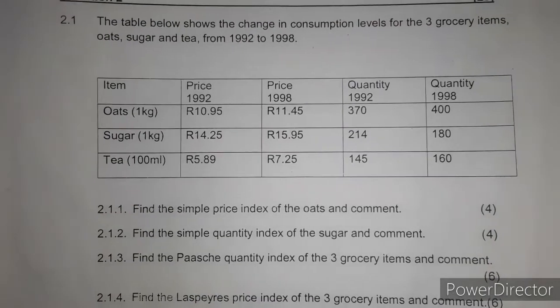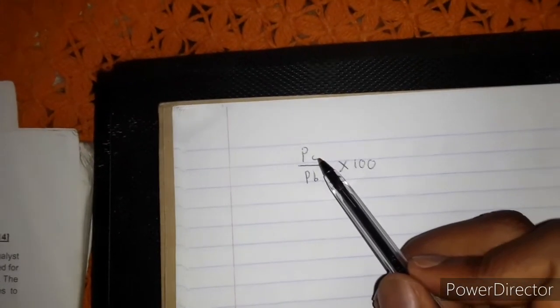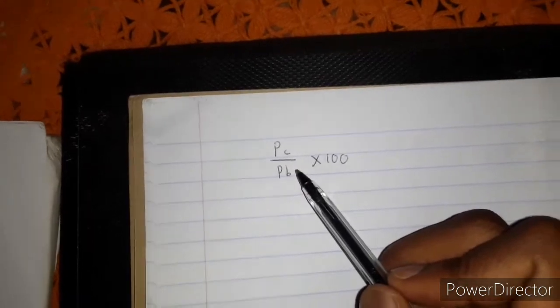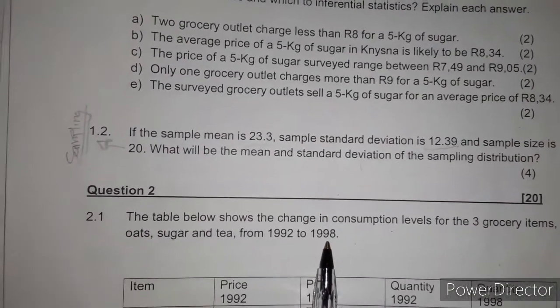The formula is PC over PB times 100. PC stands for the current price period and PB stands for the base price period. Our current period is 1998.